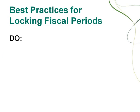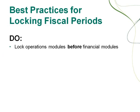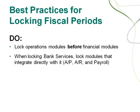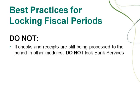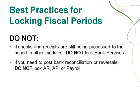In summary, remember to lock operations modules before financial modules. When locking bank services, lock the modules that integrate directly with it — AP, AR, and payroll. Create and post all outstanding GL batches for a fiscal period before you lock it for GL. Do not lock bank services if checks and receipts are still being processed, and do not lock AR, AP, or payroll if you still need to post bank reconciliations or reversals.